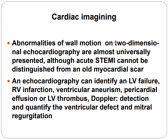Regarding cardiac imaging, abnormalities of wall motion on two-dimensional echocardiography are almost universally present, although acute STEMI cannot be distinguished from an old myocardial scar. Echocardiography can identify left ventricular failure, right ventricular infarction, ventricular aneurysm, pericardial effusion, or left ventricular thrombus. Doppler can also detect and quantify ventricular septal defects and mitral regurgitation.